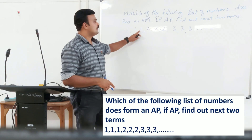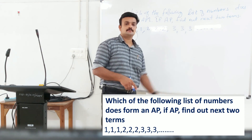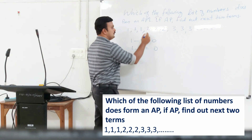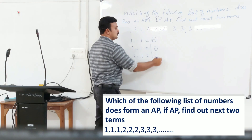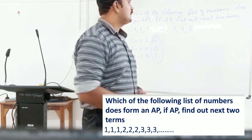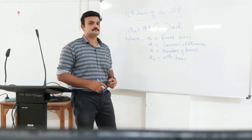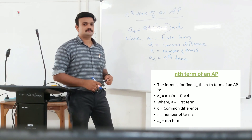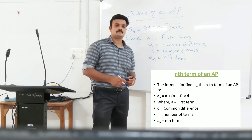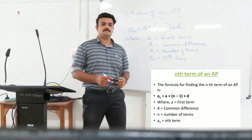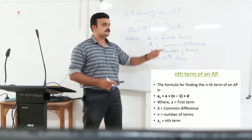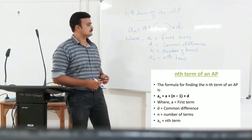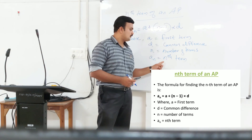Let us move to another example: 1, 1, 1, 2, 2, 2, 3, 3, 3. We check: 1 minus 1 equals 0; 1 minus 1 equals 0 again; but 2 minus 1 equals 1. So the common difference is not the same, so this is not an AP series. Now we are moving to find out the nth term of an AP. The formula for finding the nth term of an AP is: a_n equals a plus (n minus 1) times d, where a is the first term, d is the common difference, n is the total number of terms, and a_n is the nth term.